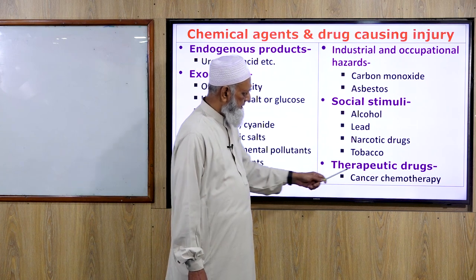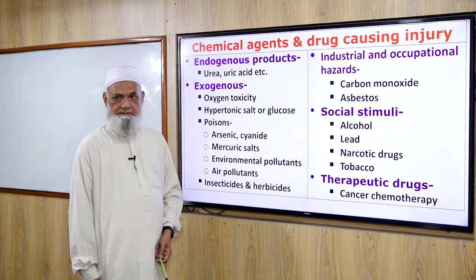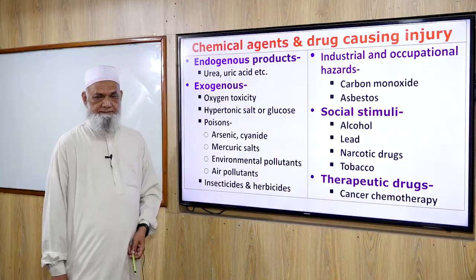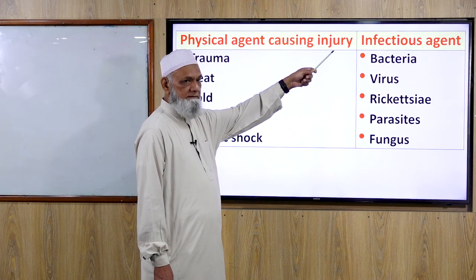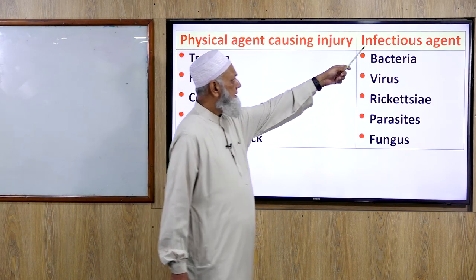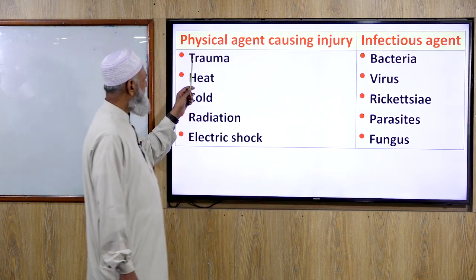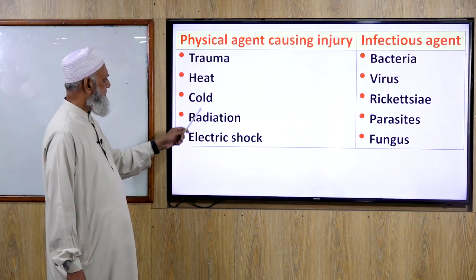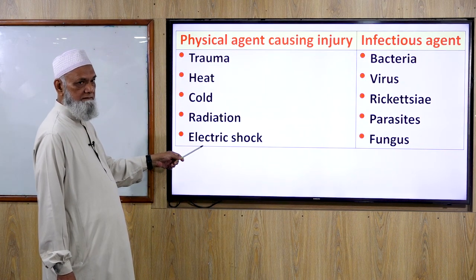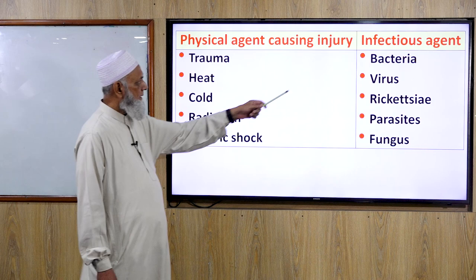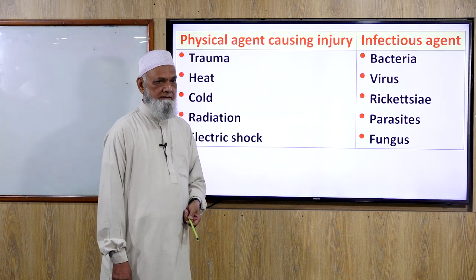Therapeutic drugs and chemotherapeutic agents also cause cell injury. Physical agents causing injury include trauma, heat, cold, radiation, and electric shock. Infectious agents include bacteria, viruses, rickettsia, parasites, and fungi.